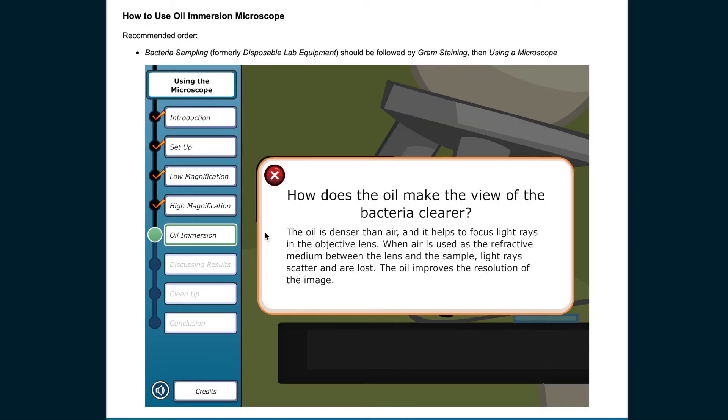How does the oil make the view of the bacteria clearer? The oil is denser than air, and it helps to focus light rays in the objective lens. When air is used as the refractive medium between the lens and the sample, light rays scatter and are lost. The oil improves the resolution of the image.